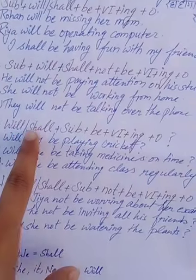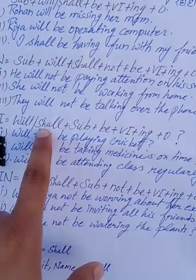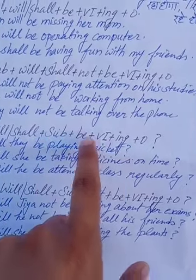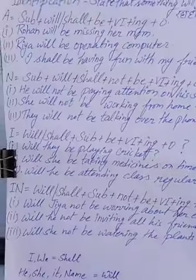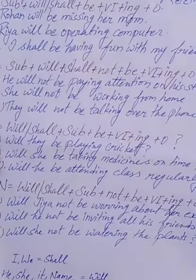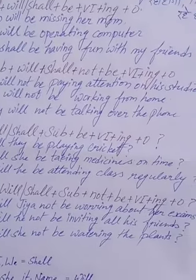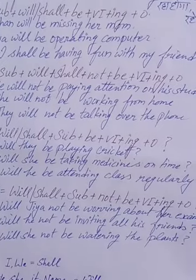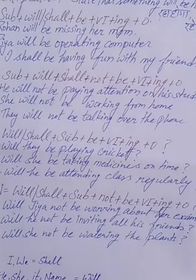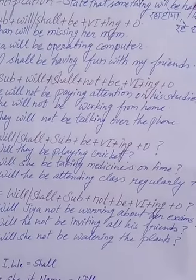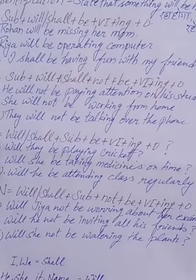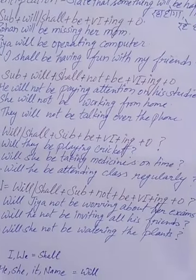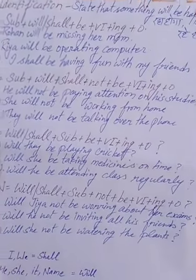For interrogative sentences, you use will or shall first because it is a question, and after that subject, then be, then present participle, then object, then a question mark. For example: Will they be playing cricket? Will she be taking medicine on time? Will he be attending class regularly?